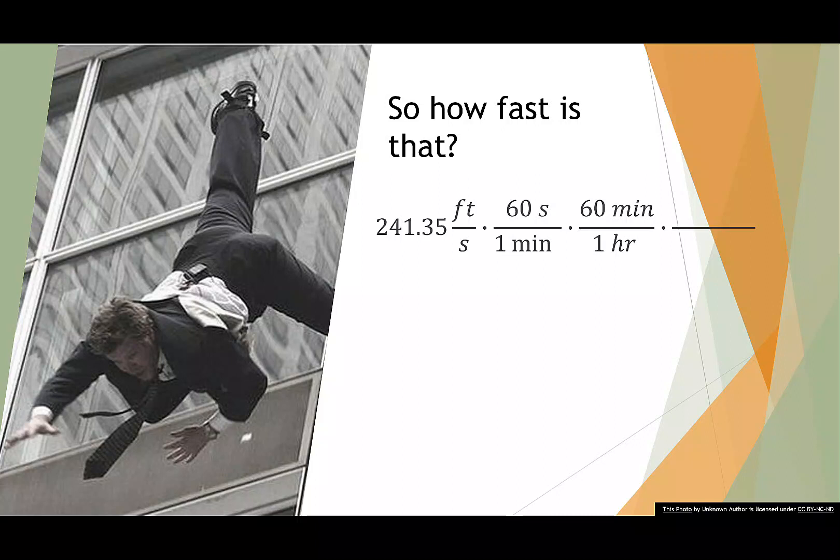Then we want to go from feet to miles. We know that every mile has 5,280 feet. So grab our calculator, and that'll give us that our speed is 164.56 miles per hour when we land on the ground.